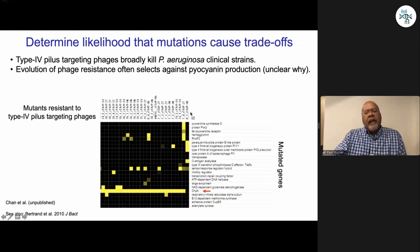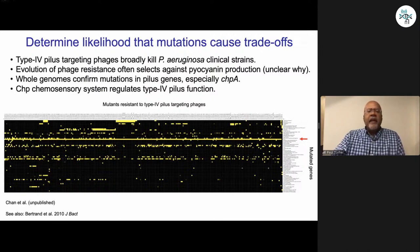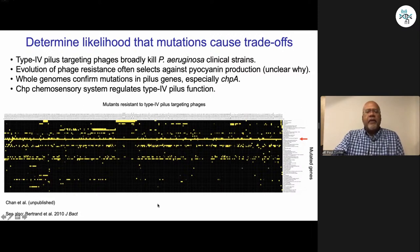In a large-scale analysis, we took susceptible bacteria killed by these type 4 pilus-targeting phages and asked where in the bacterial genome the solution to the phage problem is occurring — and where the debilitated pyocyanin production is occurring. Across very many mutants in a SNP analysis, the red arrow shows that nearly all cases had a mutation in CHPA, a chemosensory system regulator that regulates type 4 pilus function. Whole genome sequencing of many P. aeruginosa mutants confirms CHPA as a near-guaranteed target hit — altered through genetics to solve the phage problem. These are the kinds of details we need for making evolutionary predictions.